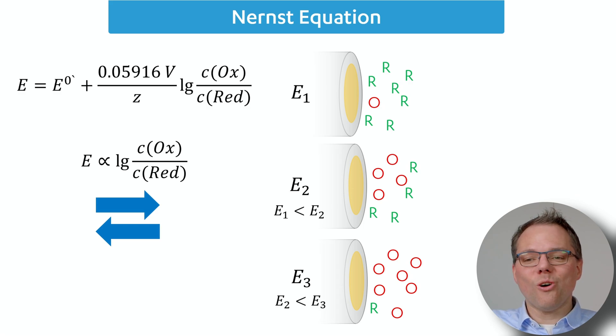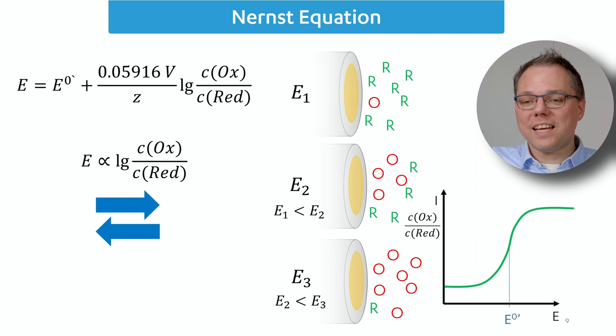This way the Nernst equation also describes how systems act when the potential is the limiting factor, and you can see that in different measurements, for example in linear sweep voltammetry. But it's not the only influence, you will see that as well, things like diffusion.